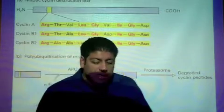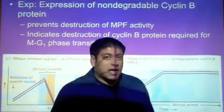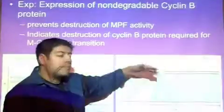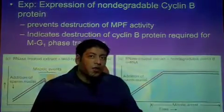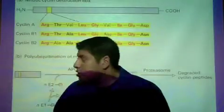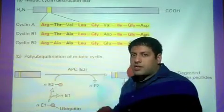In the previous experiment where we made a non-degradable form of cyclin, MPF activity also remained high. The way to make a non-degradable form of cyclin B would be to mutate the destruction box.